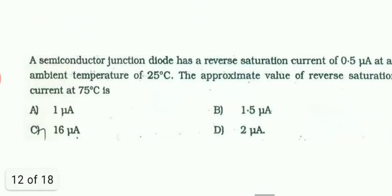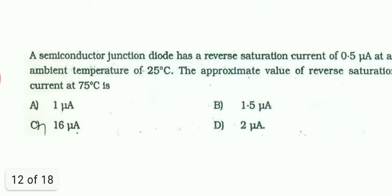Semiconductor junction diode has a reverse saturation current of 0.5 microampere at an ambient temperature of 25 degree Celsius. The approximate value of reverse saturation current at 75 degree is. So we know that in semiconductor diode, reverse saturation current doubles for every 10 degree rise in temperature. So we have to use that concept. We all know that at 25 degree, the current is 0.5.